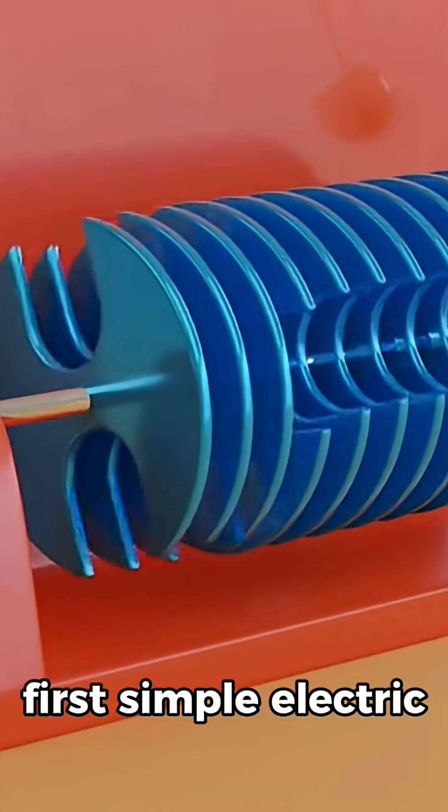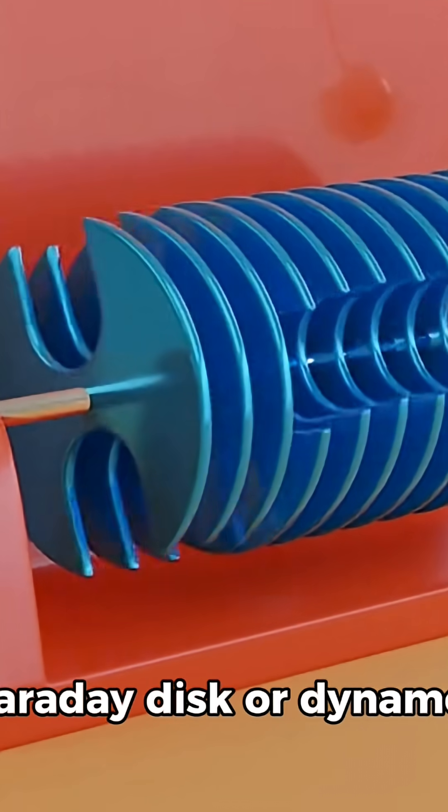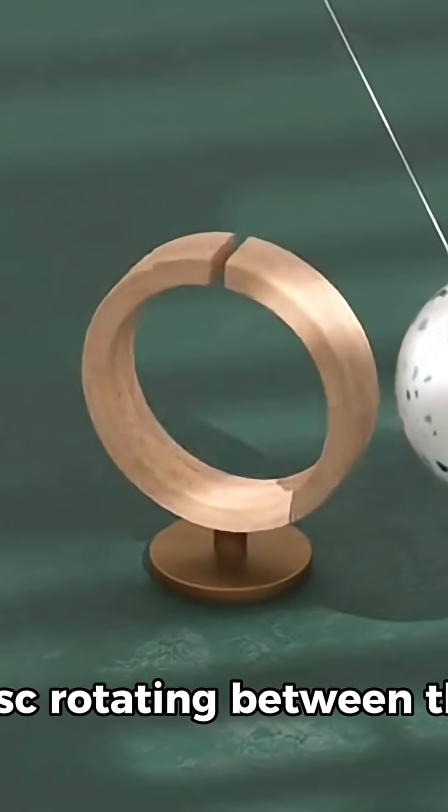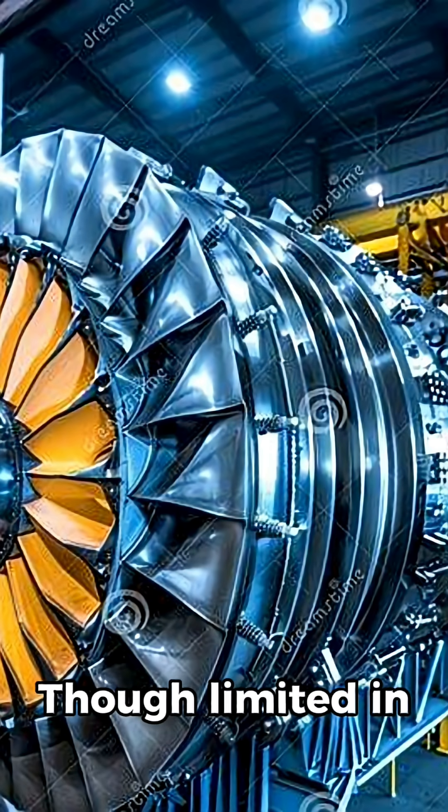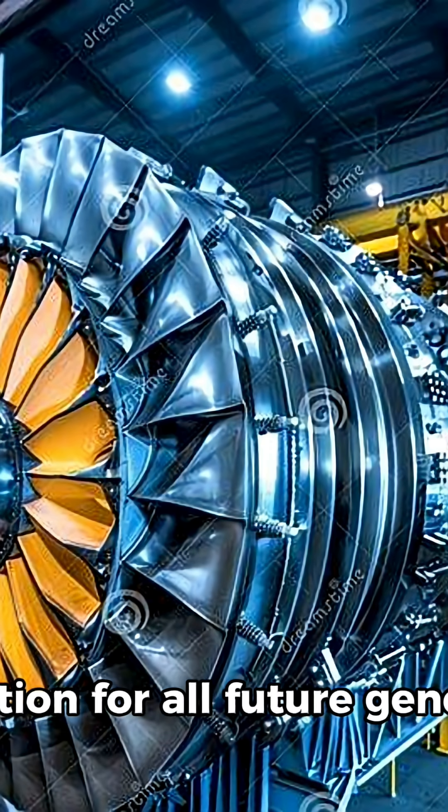Based on this, he built the first simple electric generator known as the Faraday disk or dynamo. It consisted of a copper disk rotating between the poles of a magnet, producing a continuous current. Though limited in efficiency, Faraday's invention laid the foundation for all future generators.